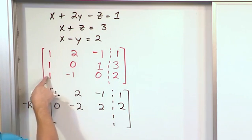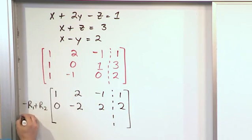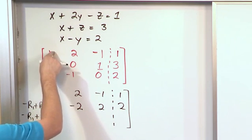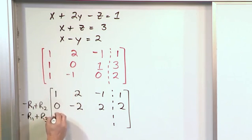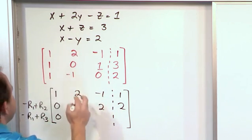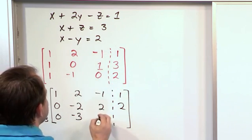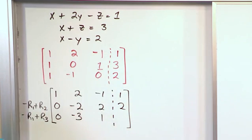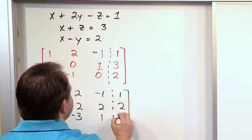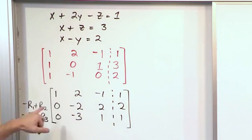And again, I want to put a zero here, so I'm going to do exactly the same thing: negative R1 plus R3. When I put a negative times this, add it here, I get a 0. Negative times this, add it here, I get negative 3. Negative times this gives me positive 1 plus that gives me 1. And then negative times this plus this gives me a positive 1. So I've achieved success.